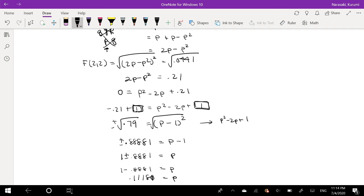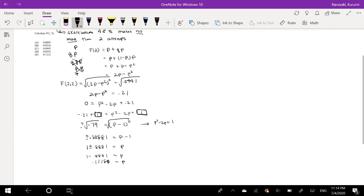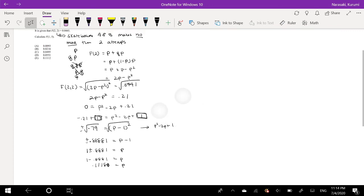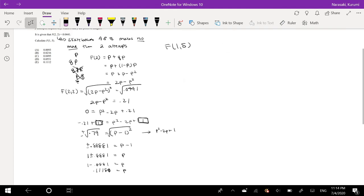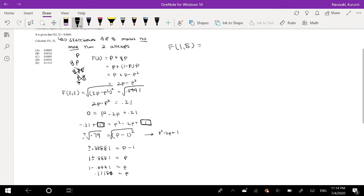which is approximately equal to 0.11180 or 0.11181, equals probability. Okay, so we know P, so we have everything we need to find what it will be when F is equal to 1, 5. Alrighty. So that means skateboarder A makes no more than one attempt.